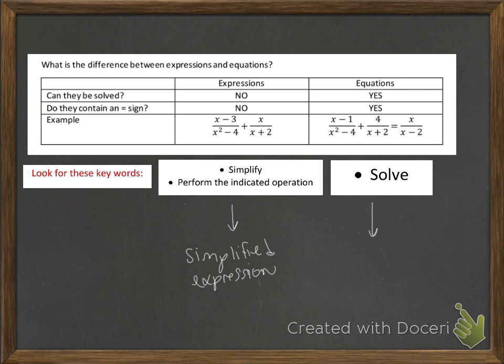What should your final answer be for an equation? Well, your final answer should be x equals something, or whatever variable you have. You're asked to solve for the variable, so you should be able to list the value or values that satisfy that equation. Of course, sometimes there is no solution. That's also a possibility.